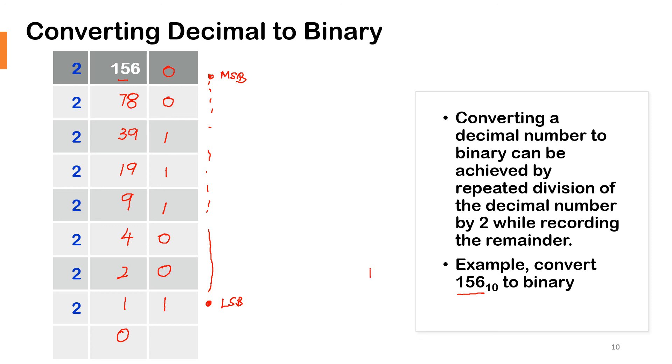So that would be 1, 0, 0, 1, 1, 1, 0, 0, base 2, binary. So 156 in decimal, this would be 10011100 in binary. So that's how you will convert a decimal to its binary.